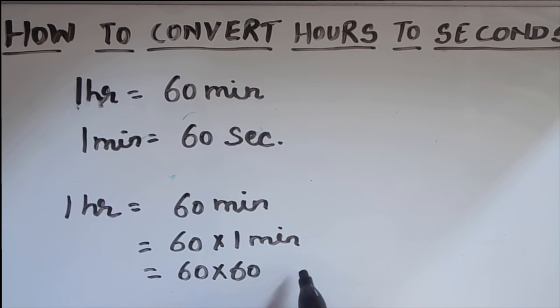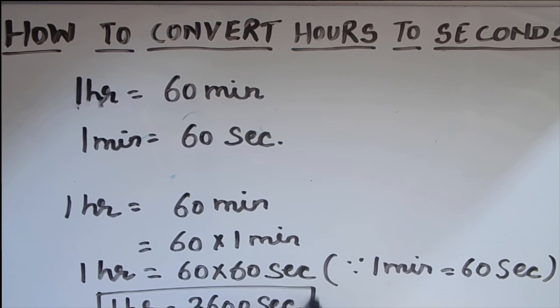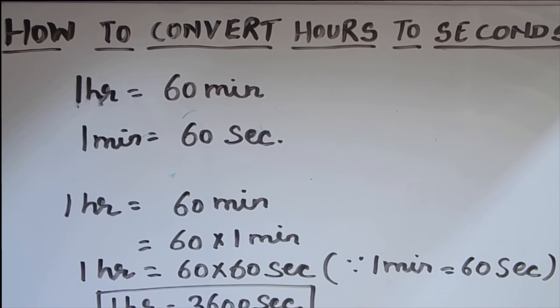So here we are going to write 60 times 60 seconds, because one minute is 60 seconds. So one hour will be equal to 60 times 60, which is 3600 seconds. So in one hour we have 3600 seconds.